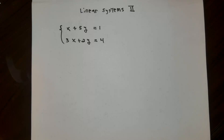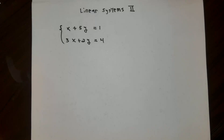To start with, I'm going to look at a system of linear equations: x plus 5y equals 1, and 3x plus 2y equals 4. If you follow the ideas we had previously, I would solve the first equation for x in terms of y, put that into the second equation, figure out what y was, and then figure out what x was. That's the method of substitution, but I want to work with this in a more direct way.